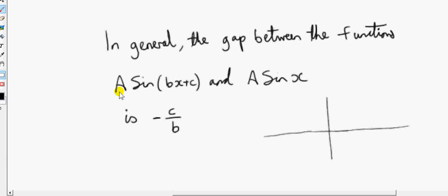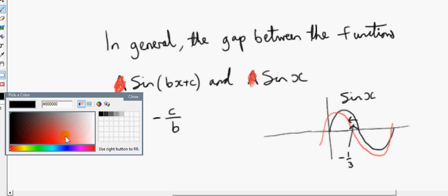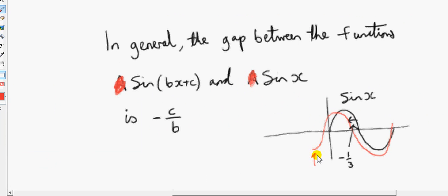So in general, the gap between the functions a sin of bx plus c and a sin of x is minus c over b. If this number is less than 0, if this number is negative, we shift the sin function to the left. It doesn't matter about the a in front of these, by the way. That makes no difference. So we shift the sin function to the left if this is less than 0. If this turns out to be greater than 0, we shift the sin function to the right. So in the example that we had, this gap was minus 1 third. So we shifted the sin function to the left. And we ended up getting this function here, which is sin of 3x plus 1. It doesn't matter what the amplitude is. So how do we arrive at this gap? Well, we just put what's inside here equal to 0. So in general, if we put bx plus c...